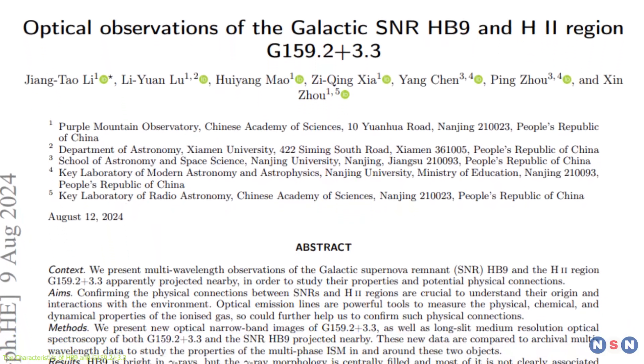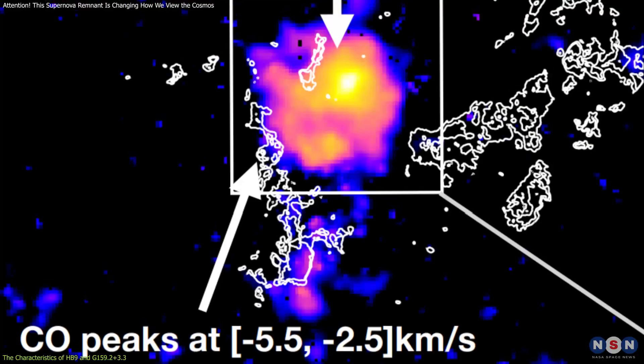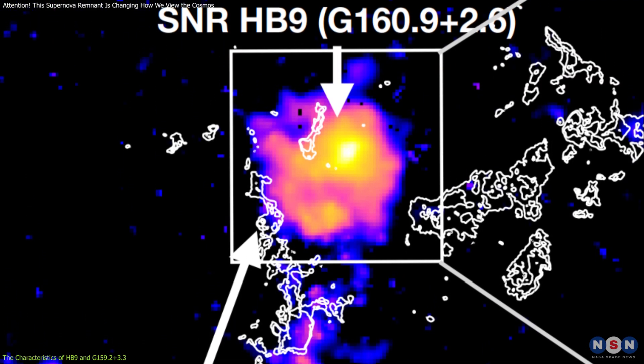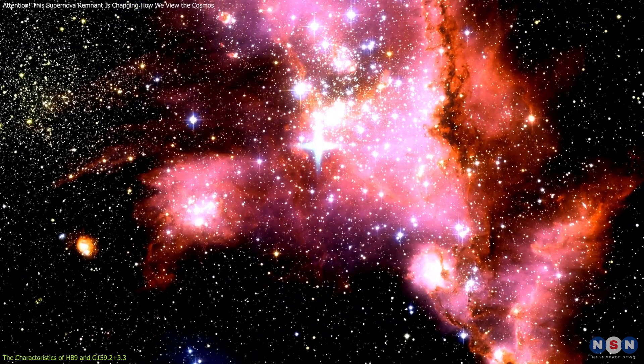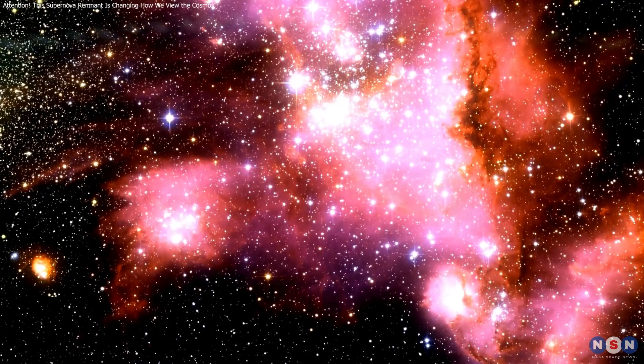The study also measured the radial velocity of the southeast shell of Hb9, finding that it ranged from negative 30 to positive 50 kilometers per second, which could indicate that the supernova remnant's shockwave is heating the gas in the surrounding region.